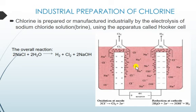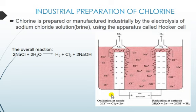When a direct current is passed into the sodium chloride solution, chlorine gas is collected at the anode and hydrogen gas is collected at the cathode. Oxidation occurs at the anode and reduction occurs at the cathode.